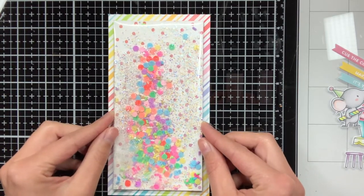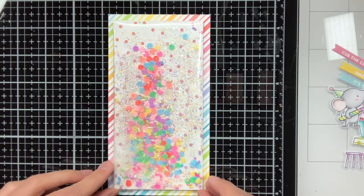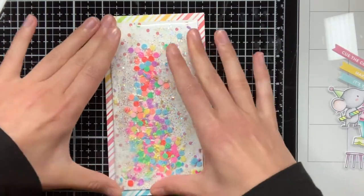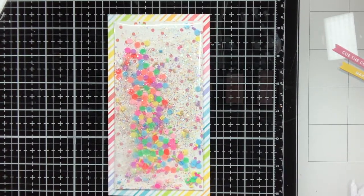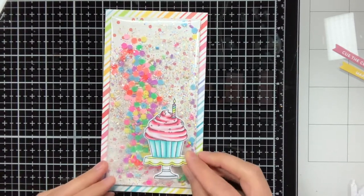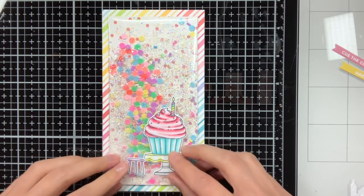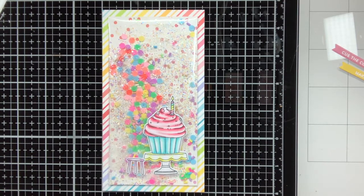On the back of the shaker part I put double sided adhesive, and now I am going to adhere it on the card base. I always love this part where everything is coming together and you can see what a nice rainbow colored card this is going to be.